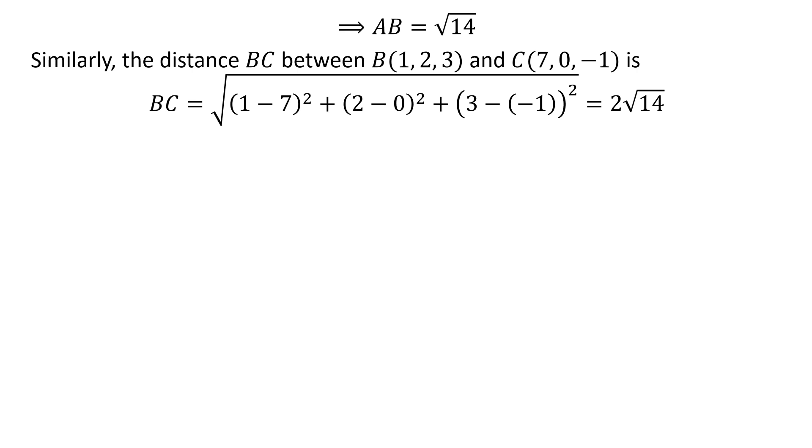Similarly, the distance BC between the points B(1, 2, 3) and C(7, 0, -1) is equal to the square root of (1 - 7)² plus (2 - 0)² plus (3 - (-1))², which equals 2√14.